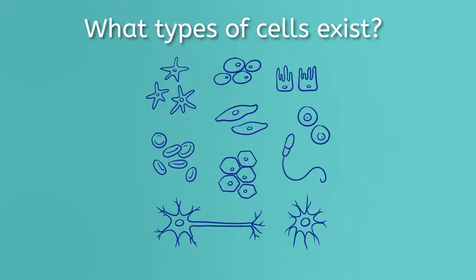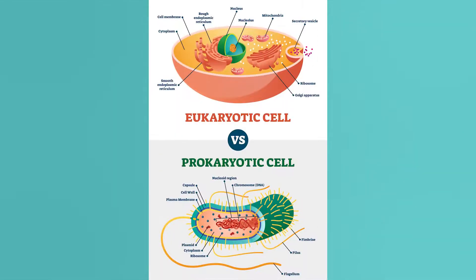Tons and tons of different specialized and specific cells exist. To begin to understand these differences between cells, we'll start with the two broadest categories of cells: prokaryotic and eukaryotic cells.